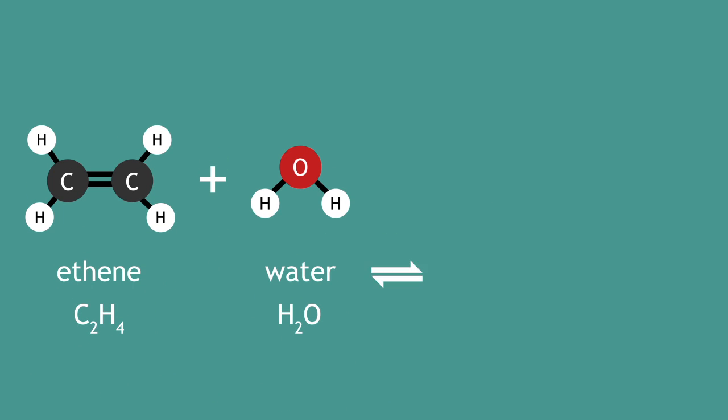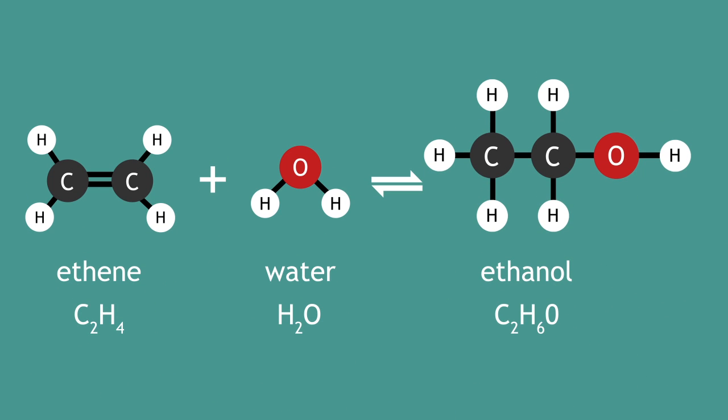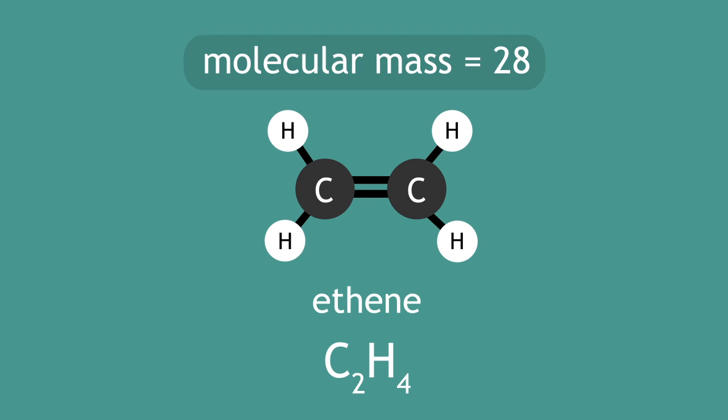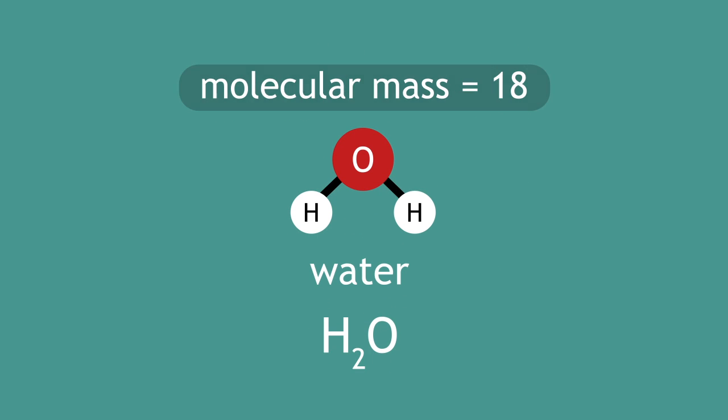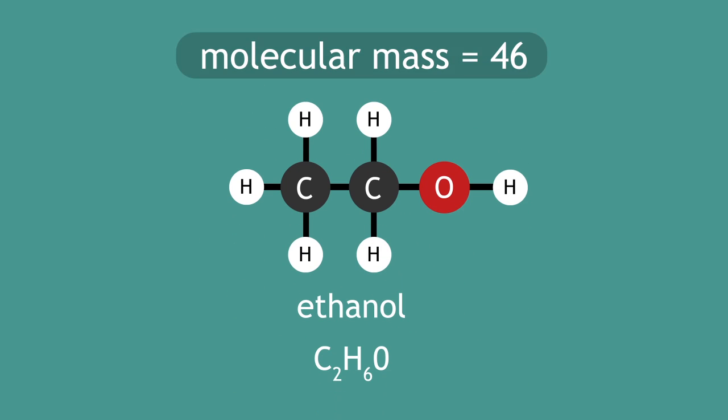For example, take the reaction of ethene and water to produce ethanol. Ethene has a molecular mass of 28, water a molecular mass of 18, and ethanol a molecular mass of 46.